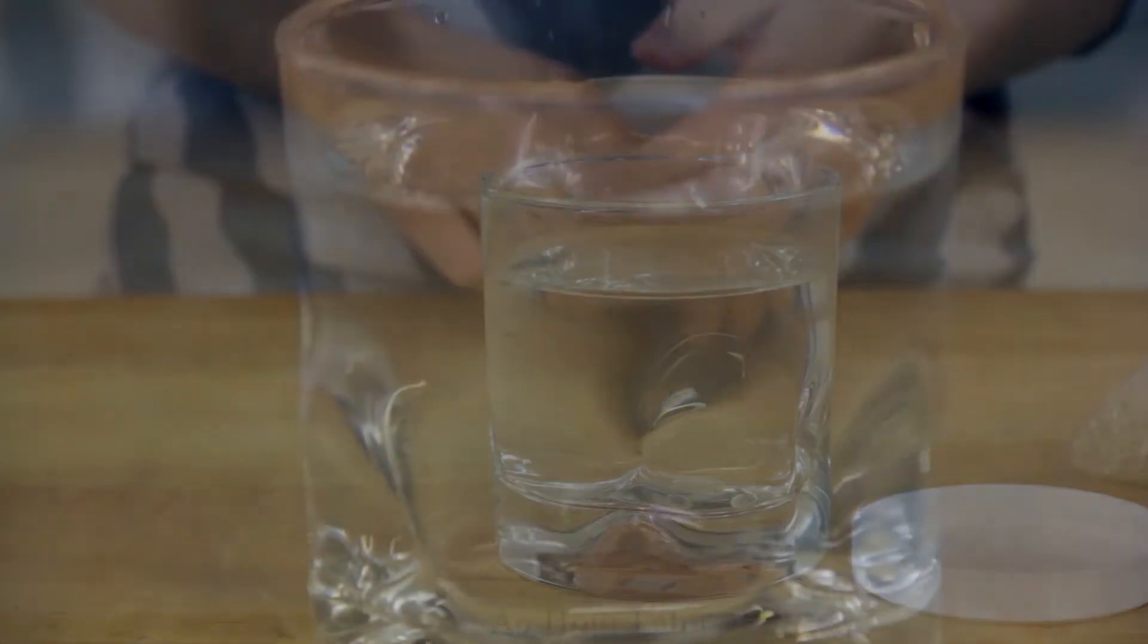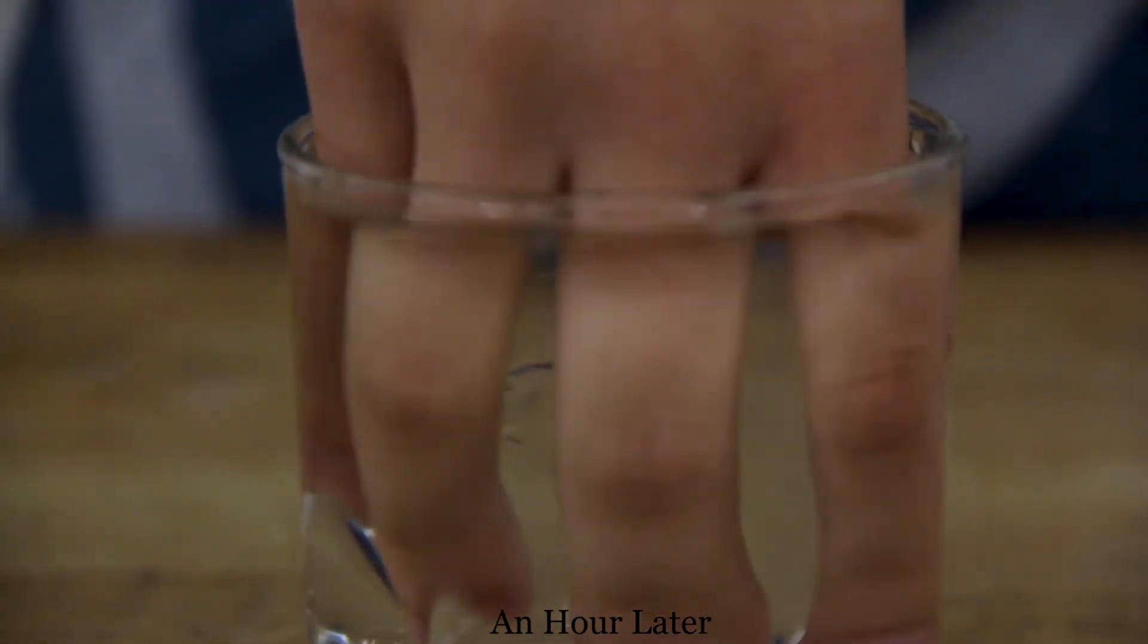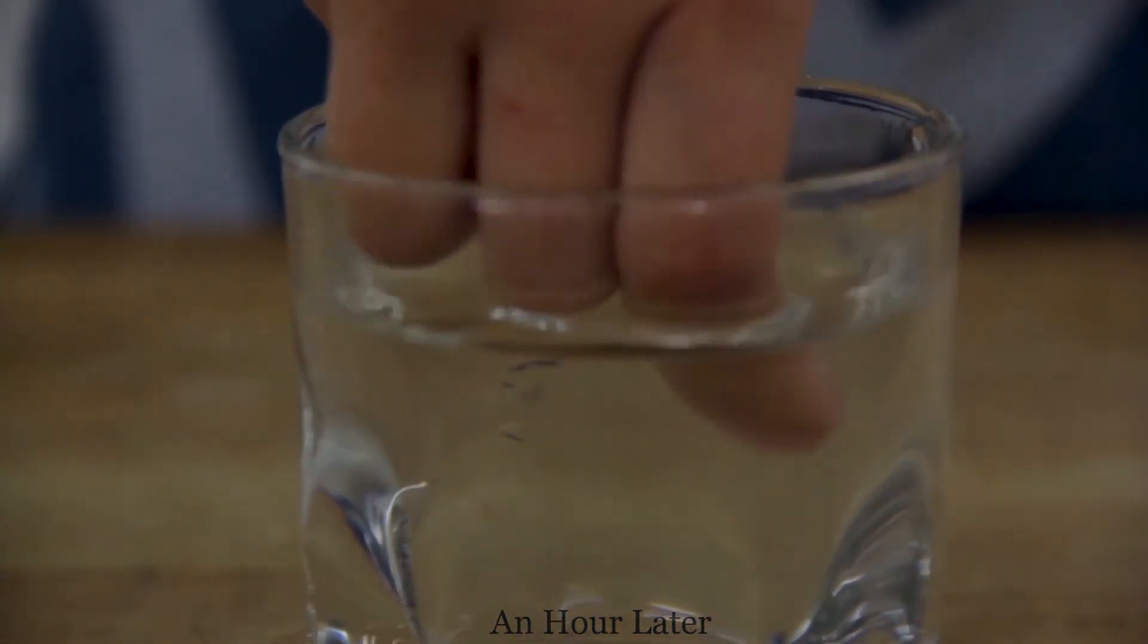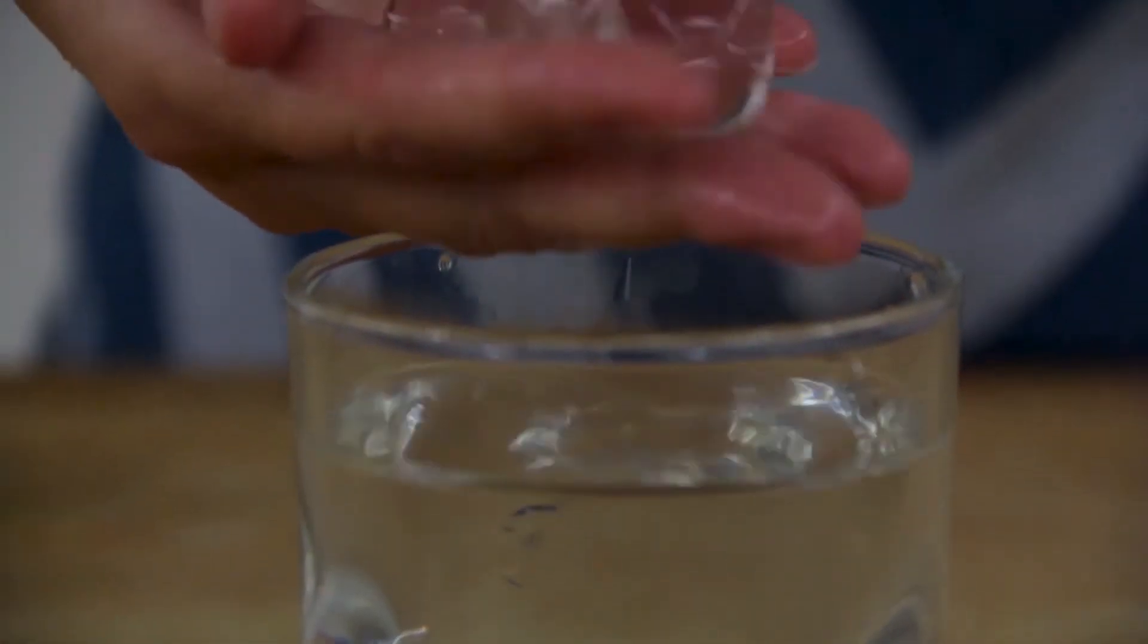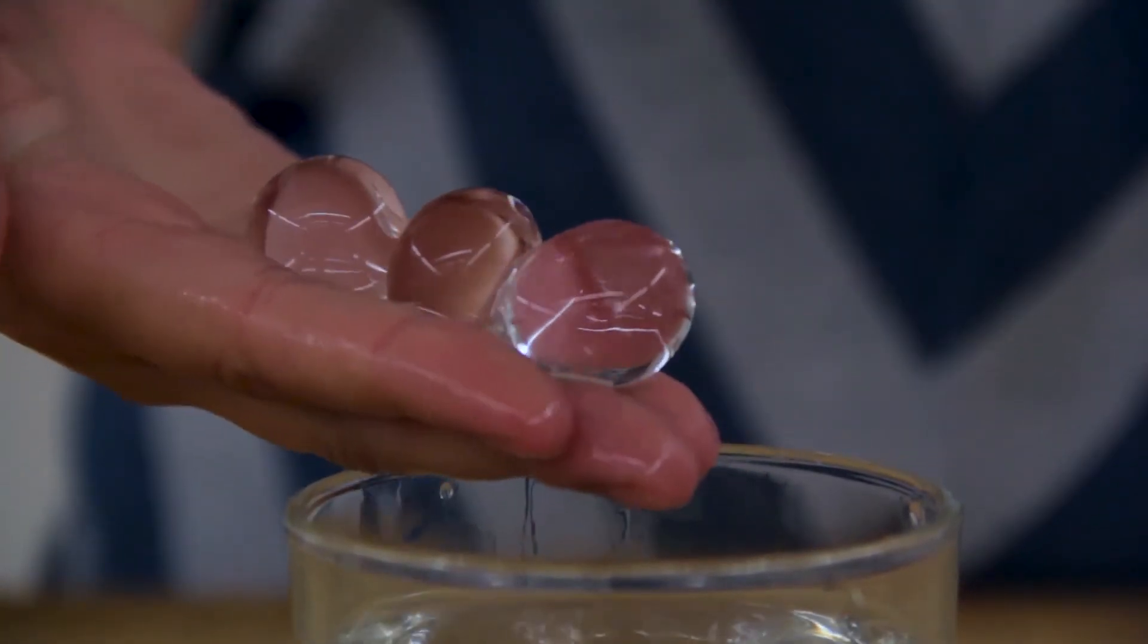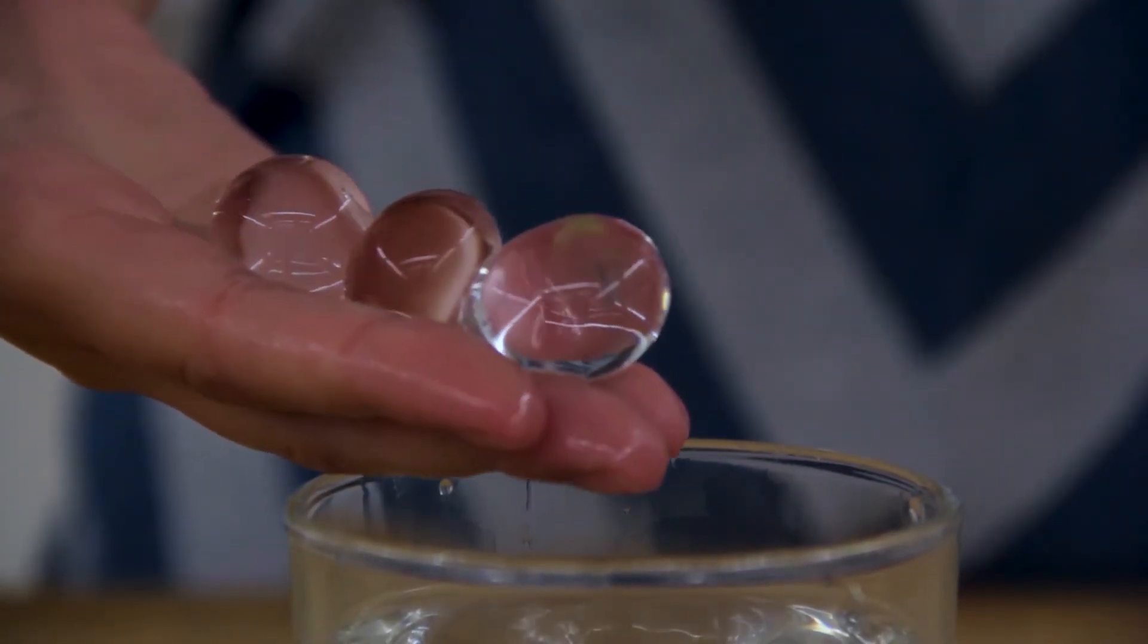They can absorb a lot of water, many times their weight. So now they are effectively little balls of water, in water. No wonder we can't see them. Light moving through them is not bent since there is no change in the index of refraction.